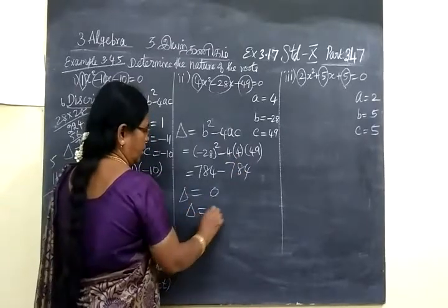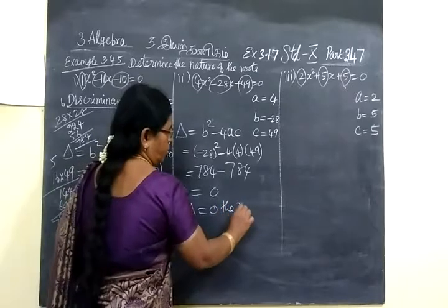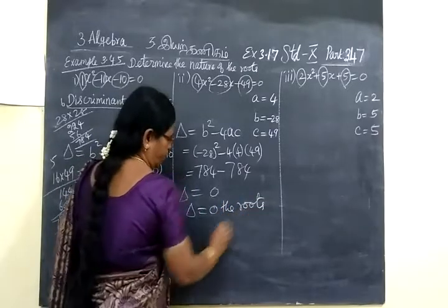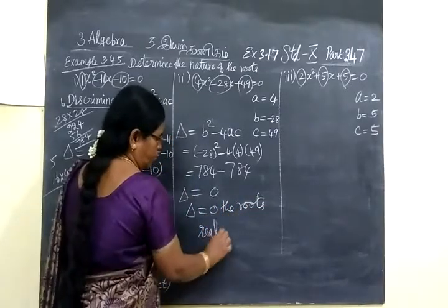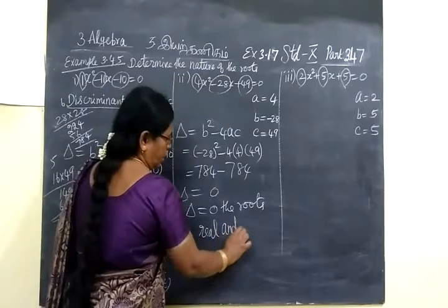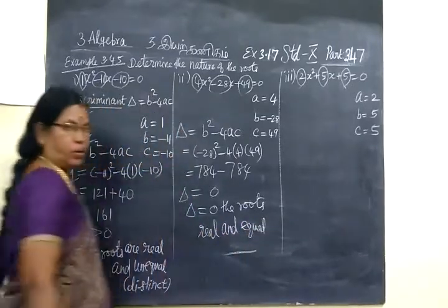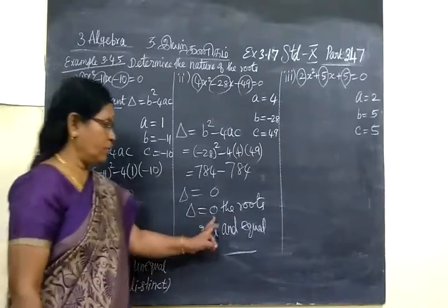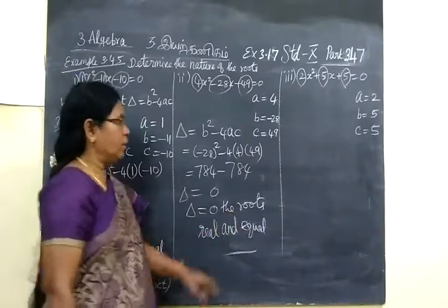Since delta equal to 0, the roots are real and equal. By property, if delta equal to 0, the roots are real and equal.